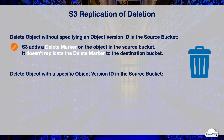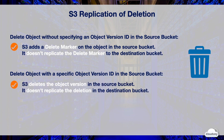When you delete an object without specifying an object version ID in the source bucket, S3 only adds a delete marker on the object in the source bucket but doesn't replicate the delete marker to the destination bucket. When you delete an object with a specific object version ID, S3 only deletes that specified version in the source bucket and doesn't replicate the deletion to the destination bucket. These intended deletion behaviors protect replicas in the destination bucket in the event of malicious deletions in the source bucket.